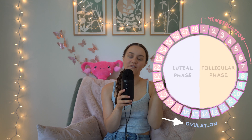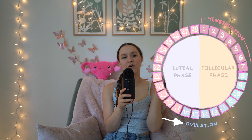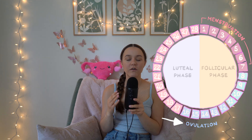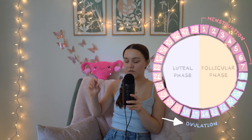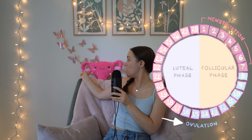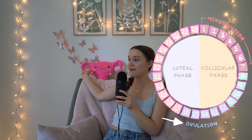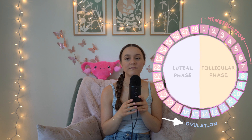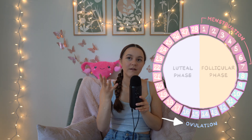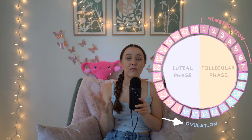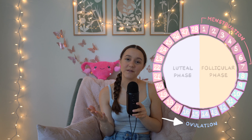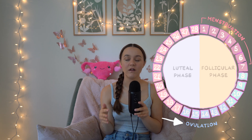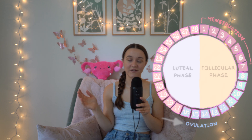Ovulation marks the second phase — the second half of your menstrual cycle — called the luteal phase. The luteal phase begins with ovulation, where the most dominant follicle releases its egg, marking this second phase of the menstrual cycle. This phase lasts from the day you ovulate, which is around day 14 — it will vary depending on the length of your cycle — until you get your period again.